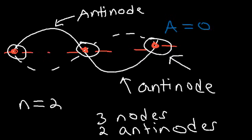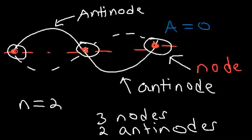You may be tested on nodes and antinodes. But just in case you do see it on a test, you now know how to answer these questions. Remember: constructive interference occurs at the antinode, and destructive interference occurs at the node.